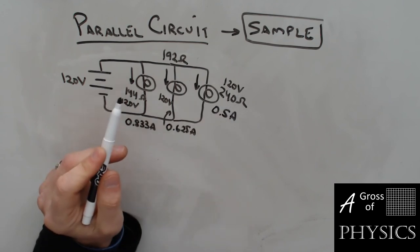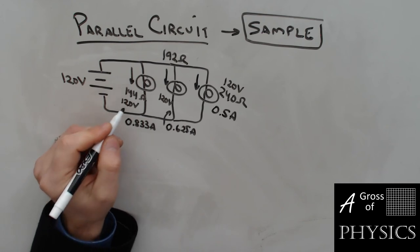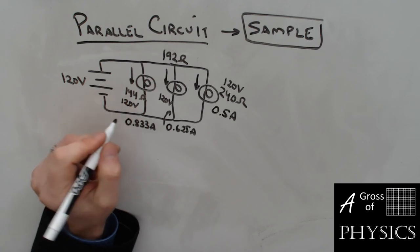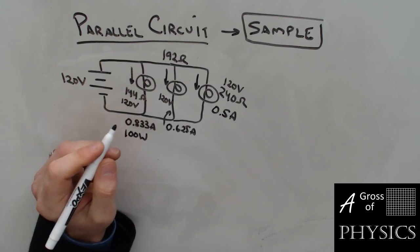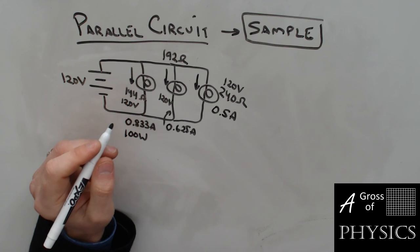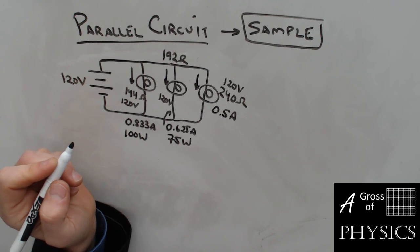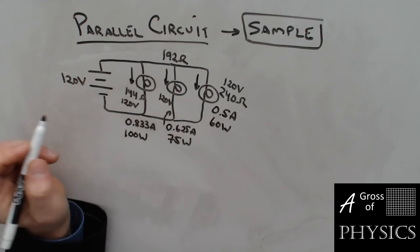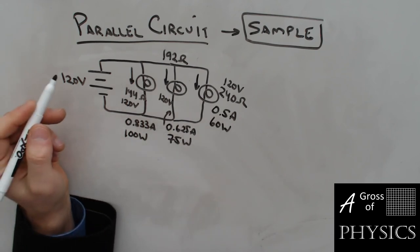We can find the power for each bulb using P = VI: 120 × 0.833 = 100 watts, 120 × 0.625 = 75 watts, and 120 × 0.5 = 60 watts. The power output matches the rated wattage on the light bulbs exactly — that's the beauty of connecting them in parallel to the correct supply voltage.